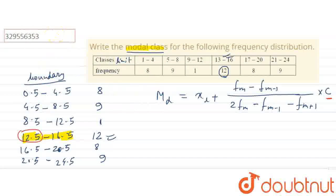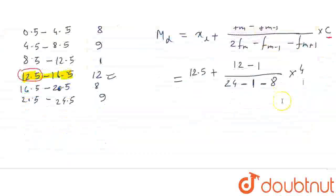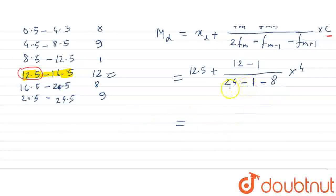Now we will check. The modal class lower limit is 12.5, the frequency is 12 minus 1. So here we see the difference is 4. This is the solution. We will take the value: 12.5 plus 11 times 4 divided by (24 minus 1 minus 9), which equals 12.5 plus 44 divided by 14, which equals 15.43 approximately.